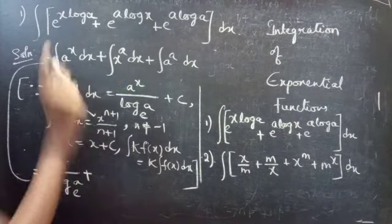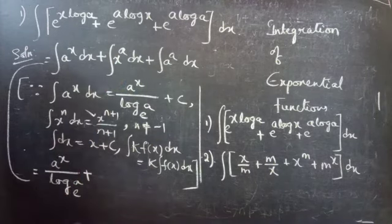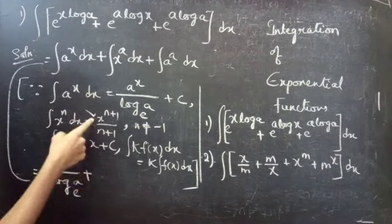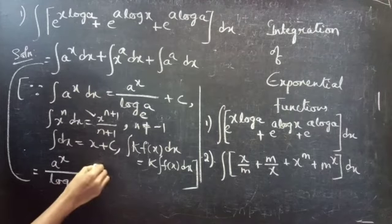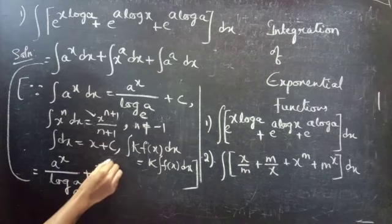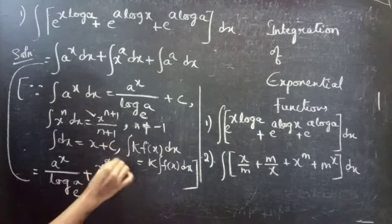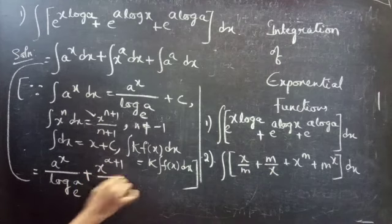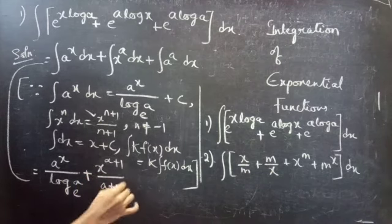Here n is a constant, so you can use this formula and you get x^(a+1) divided by (a+1).